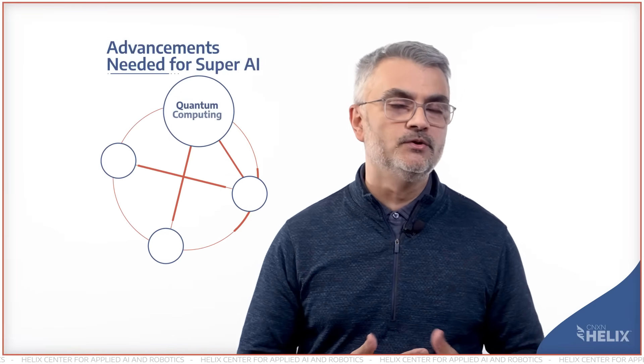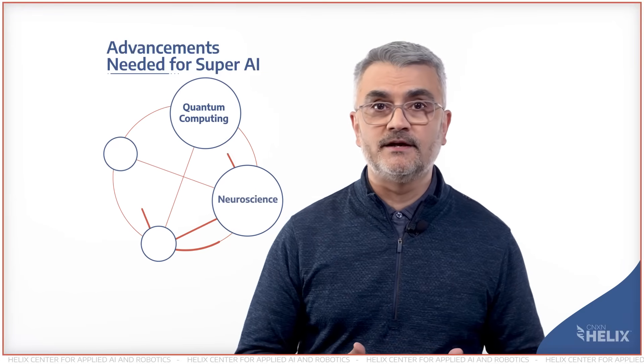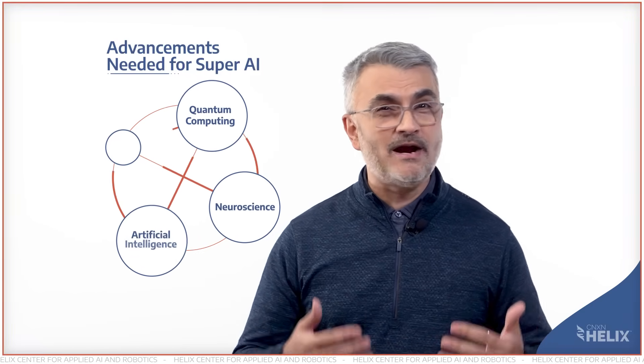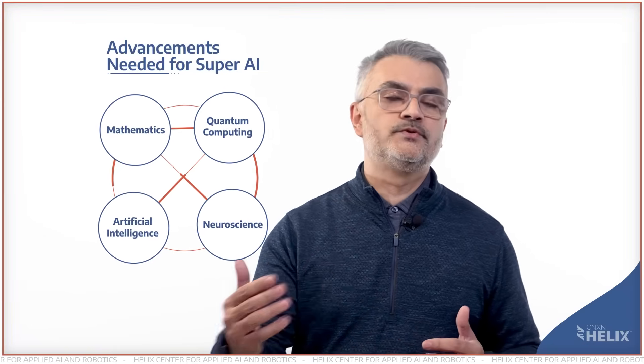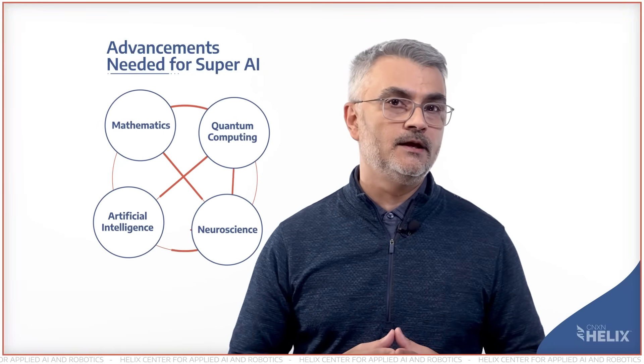My belief is that attainment of super intelligent and cognitive AI systems is not possible until we arrive at a better sense of our own biological neural cognitive mechanics. I see super intelligent AI systems coming out of a convergence of quantum computing, advancements in neuroscience and artificial intelligence, and perhaps even an entirely new line of mathematics developed in pursuit of quantum computing and quantum mechanics.